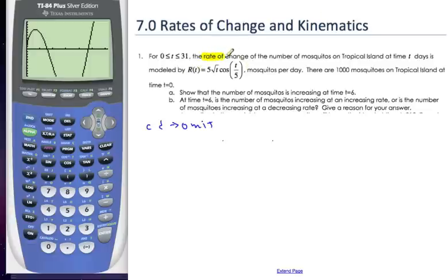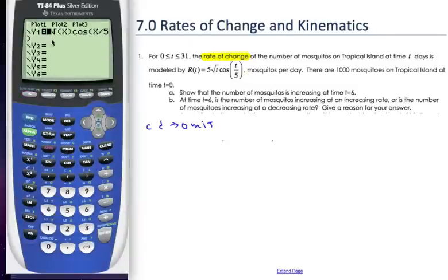So this is key. This is the equation for the rate of change. That means this is the derivative already. It's talking about how the mosquitoes are changing. So if we think about what's going on, I've taken the liberty to graph this already.